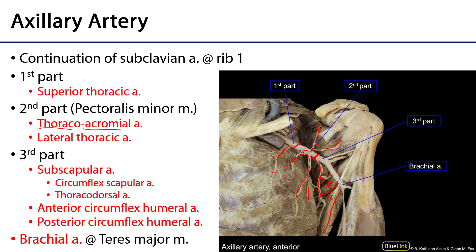The circumflex scapular artery is one of three arteries that have extensive anastomosis about the shoulder. The other two are the suprascapular, from the thyrocervical trunk, and the dorsal scapular artery from the third part of the subclavian artery. The remaining two branches of the third part of the axillary artery are the anterior circumflex humeral and the posterior circumflex humeral. The posterior circumflex humeral is often accompanied by the axillary nerve of the brachial plexus. Both circumflex humeral arteries supply collateral circulation to the deltoid muscle and the proximal muscles of the arm, with the posterior generally being more robust than the anterior.